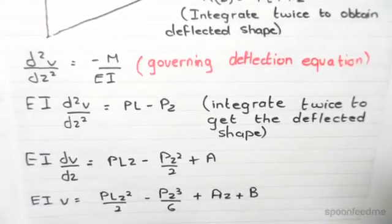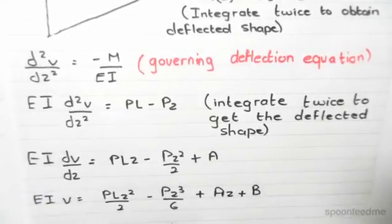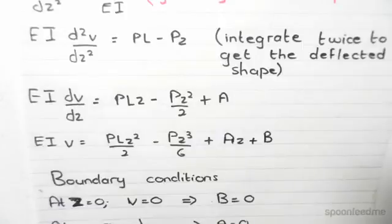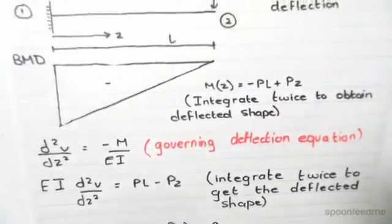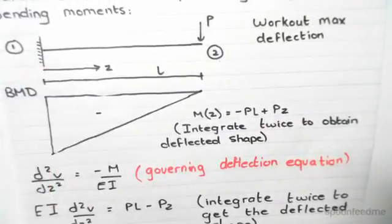Now we can apply boundary conditions to work out these unknowns A and B. At z = 0, v = 0. This is because z = 0 is at the cantilever point.